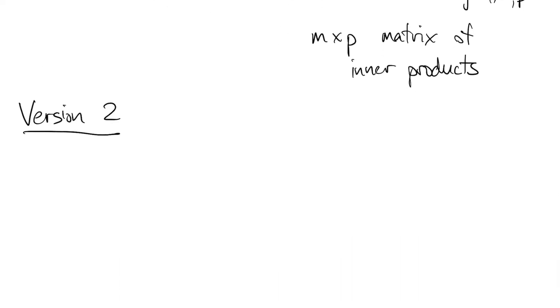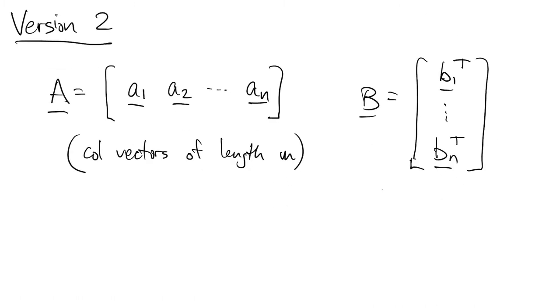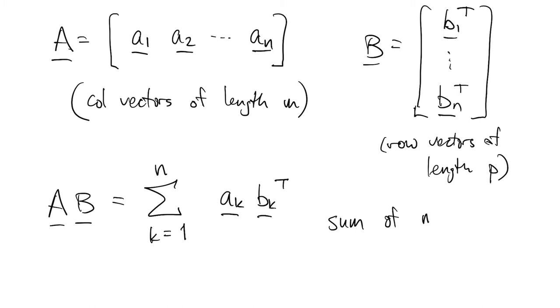The second version of matrix multiplication, we're going to reverse the situation. We'll write A in terms of its columns. Each column has length m. And we'll write B in terms of its rows. These are not the same symbols as before. We're choosing different vectors here. Then we can write the product AB as a sum of outer products between the columns of A and the rows of B. Each of those outer products is m by p because those are the outer dimensions of the vectors involved in them.